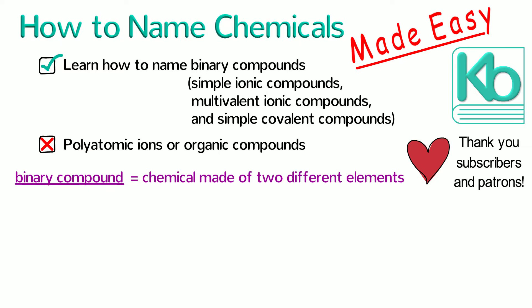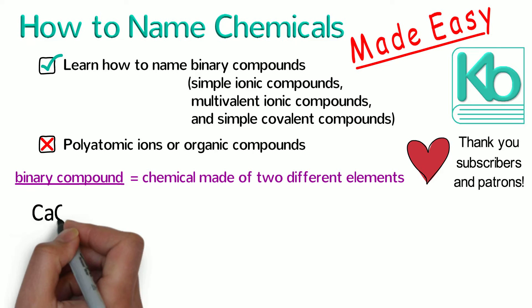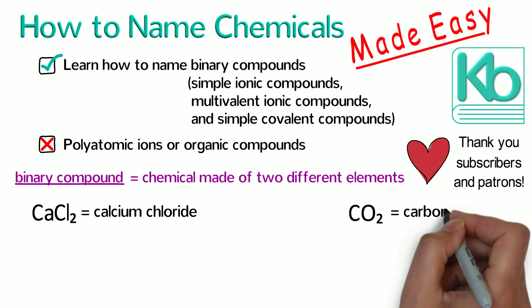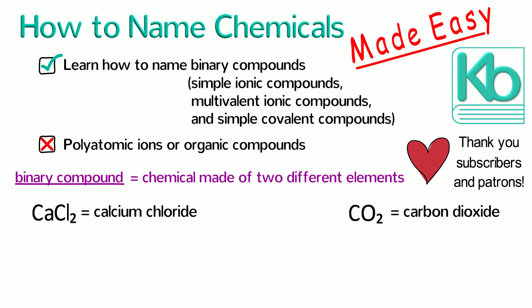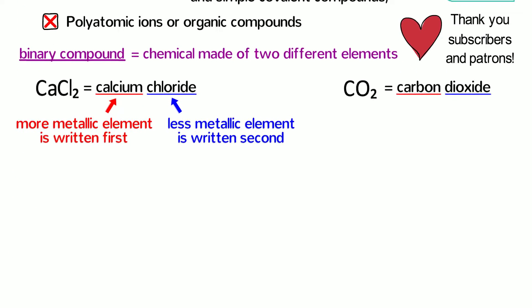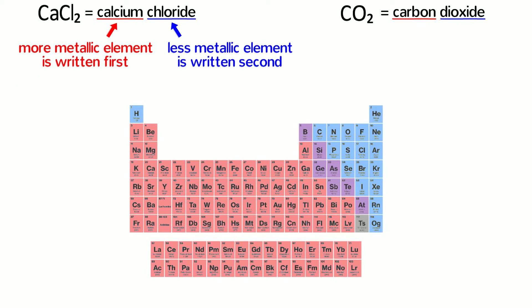Let's start out by looking at two common examples: CaCl2, which is calcium chloride, and CO2, which is carbon dioxide. In these examples and in general, the more metallic or less electronegative element is written first, and the less metallic or more electronegative element is written second. This is true for both the chemical name and formula. You can determine the metallic nature of an element by looking at the periodic table.